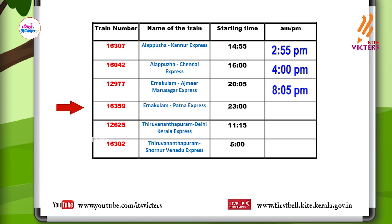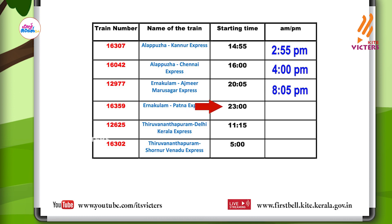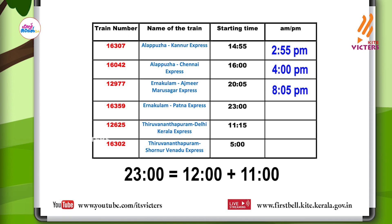Now look at the fourth one. Train number 16359, Ernakulam Patna Express. Its starting time is twenty-three hours. Twenty-three hours means twelve hours plus eleven hours, that means eleven hours after twelve noon. In twelve-hour clock, we can write it as eleven PM.